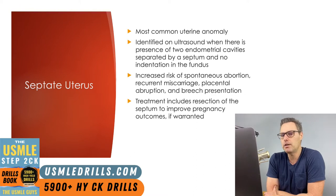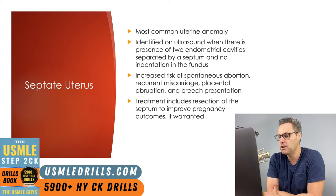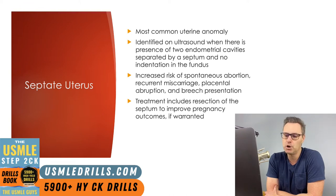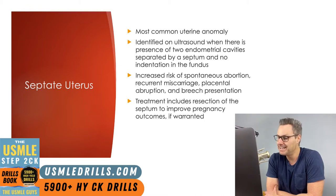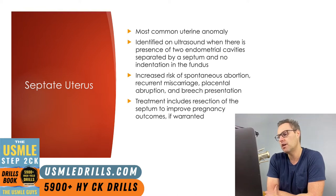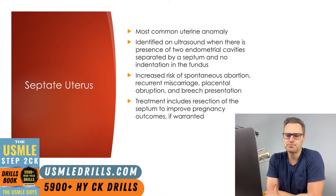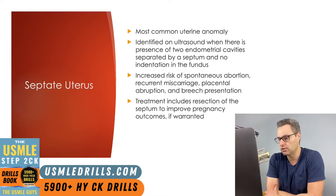Let's start with septate uterus, which is actually the most common uterine anomaly. It is identified on ultrasound by the presence of two endometrial cavities separated by a septum and no indentation in the fundus. This absence of fundal indentation is a very important point distinguishing this condition from a bicornate uterus. If an indentation is present, it cannot be even one centimeter large.